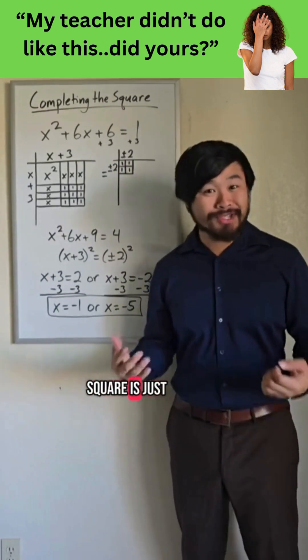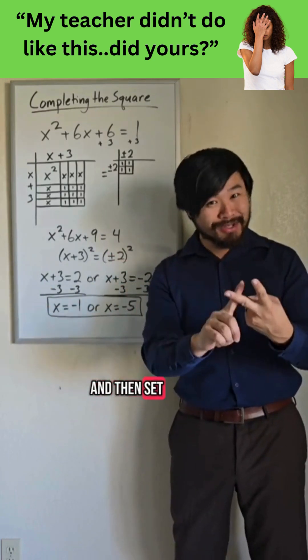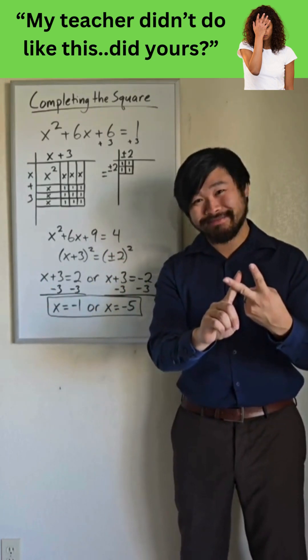So completing the square is just 2 steps. Literally complete the square so we have square equals square, and then set their side lengths equal to each other.